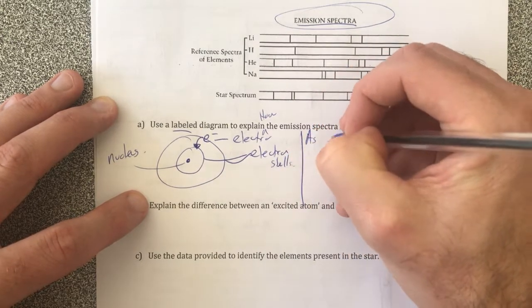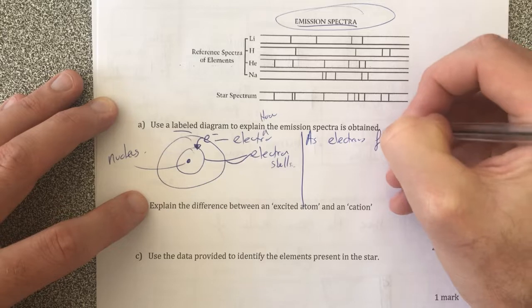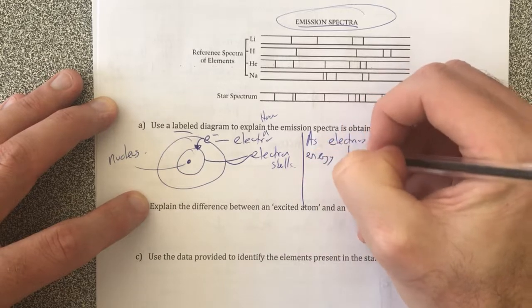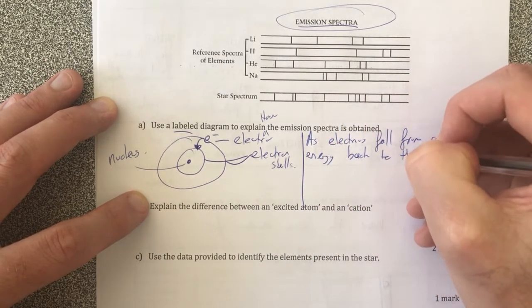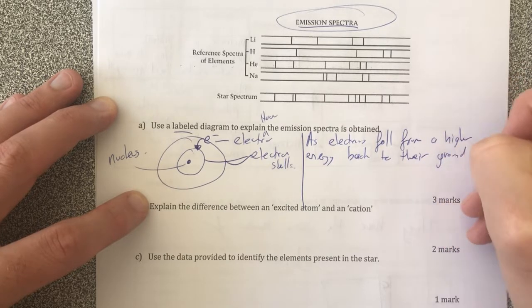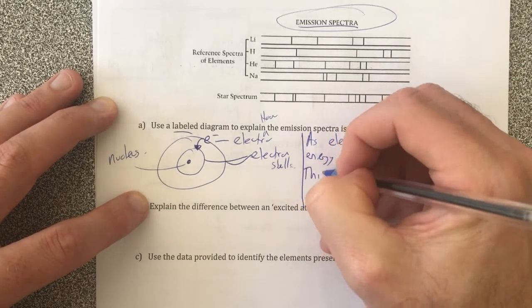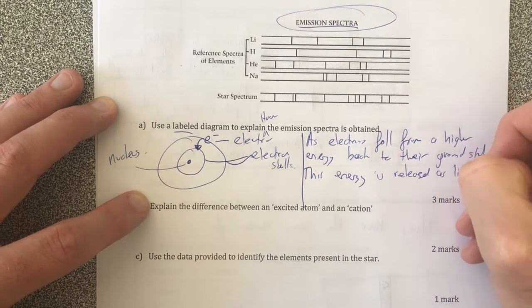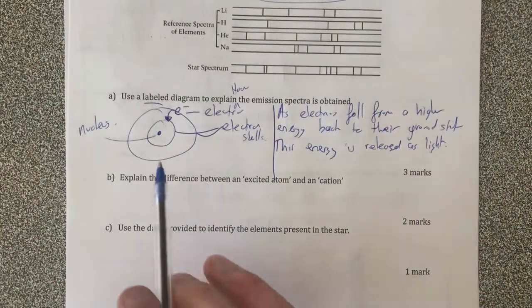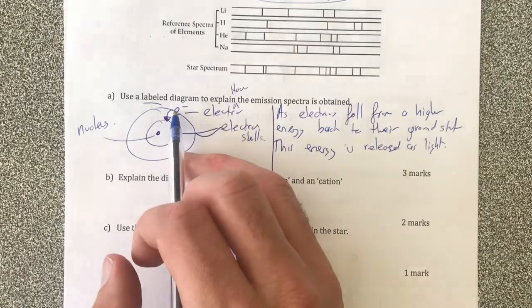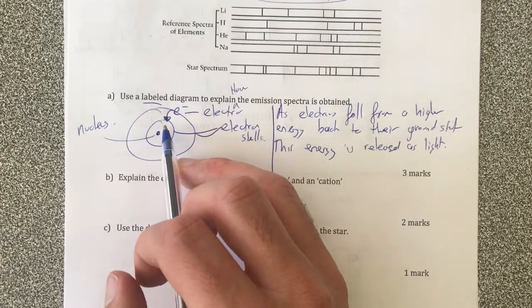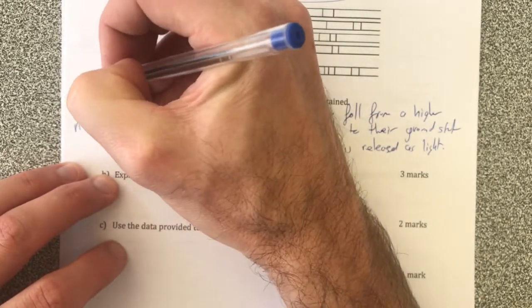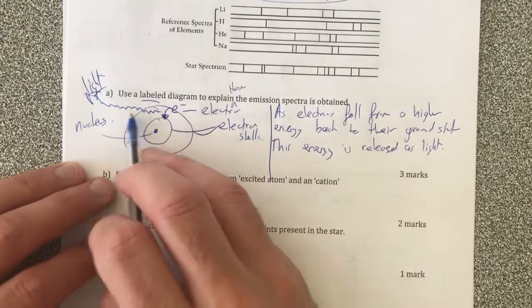So then I'll go into a little diagram or a sentence as to what this diagram is talking about. As electrons fall from a higher energy back to their ground state, this energy is released as light. So therefore we have a good basic diagram showing the electron falling back down from a higher energy level to a lower energy level, and I probably should put that this here is light coming off it as well.